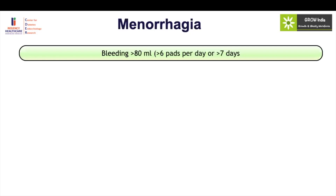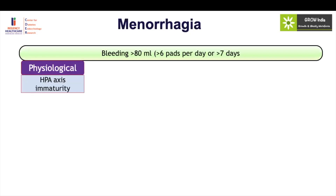If there is menorrhagia and you have checked it through the pointers, the majority of cases of menorrhagia in young girls are physiological. This is completely in contrast to what we see as gynecologists — we see more pathology in menorrhagia — but almost 80% of cases of adolescent or pubertal menorrhagia are physiological. They happen due to an immature hypothalamic-pituitary axis leading to anovulatory bleeding. These cycles may be regular or irregular, but heaviness is because the endometrium is not tuned into a proper pattern, causing excessive bleeding.